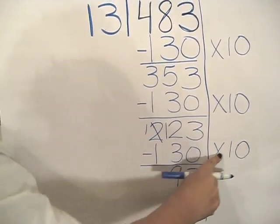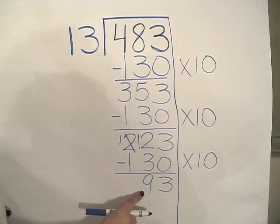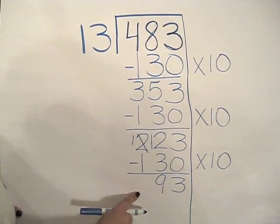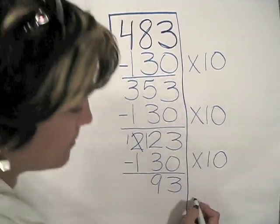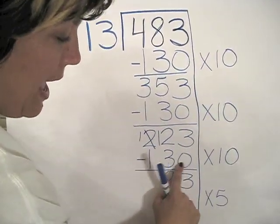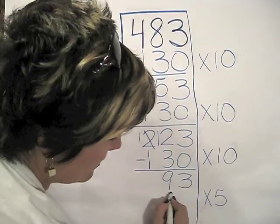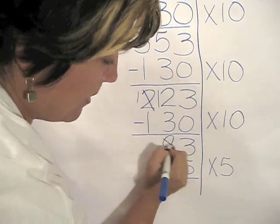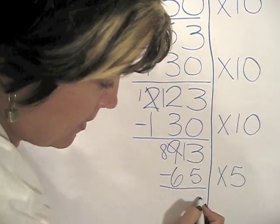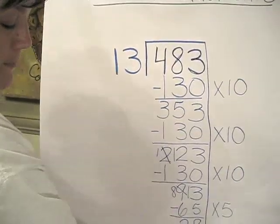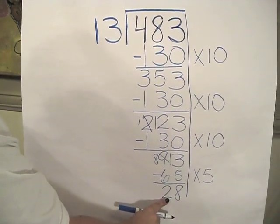Now I can't do another times 10 because 130 is more than the 93 that I have. So I'm going to try times 5. Times 5, that's going to be half of this, so I have 65. Again, we're going to have to regroup. 13, and I still have 28 left.